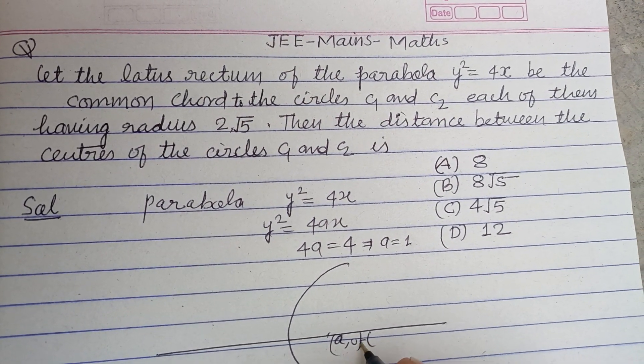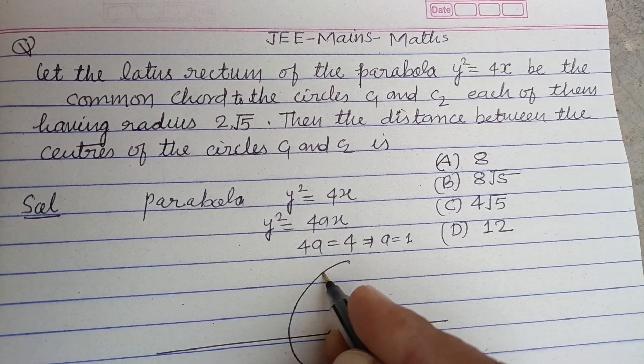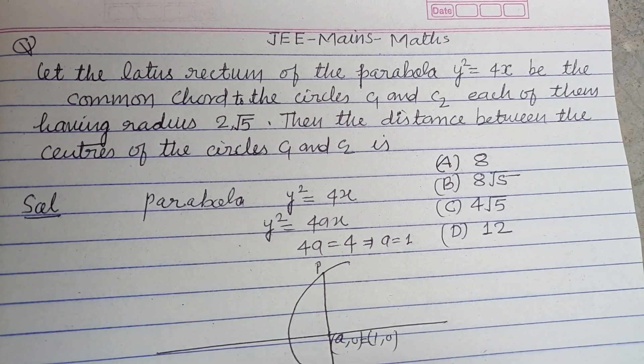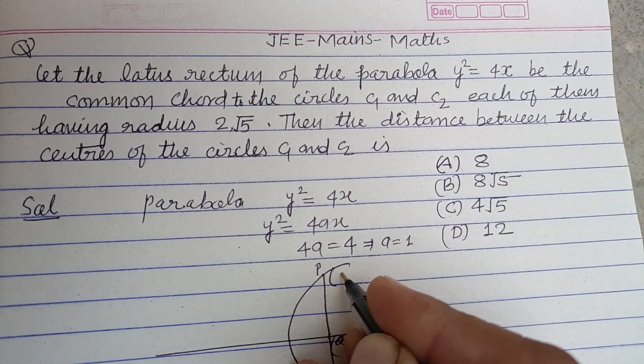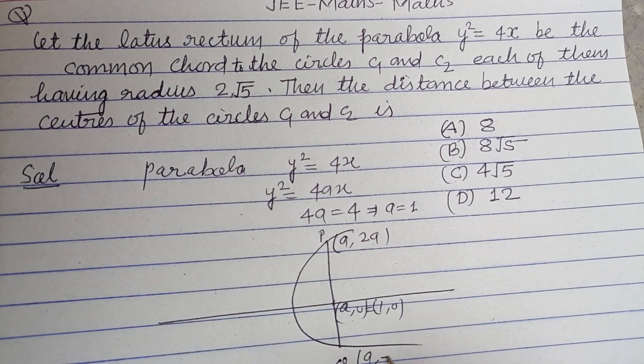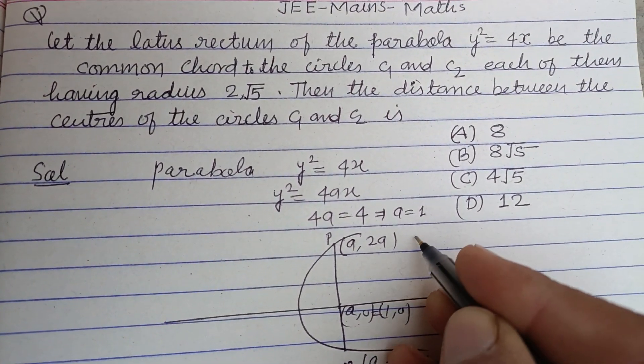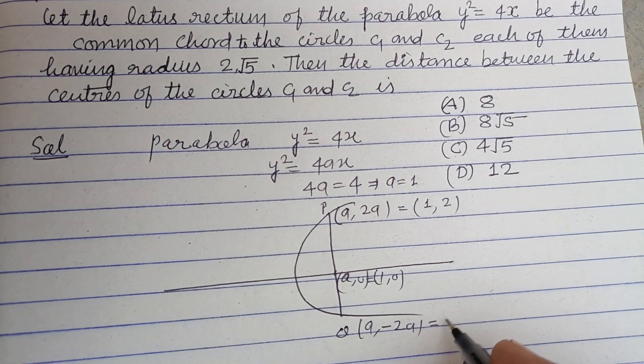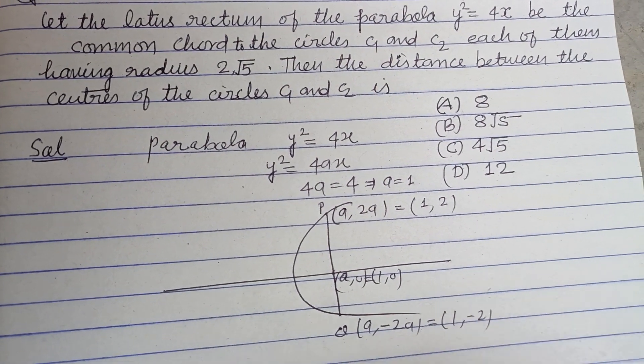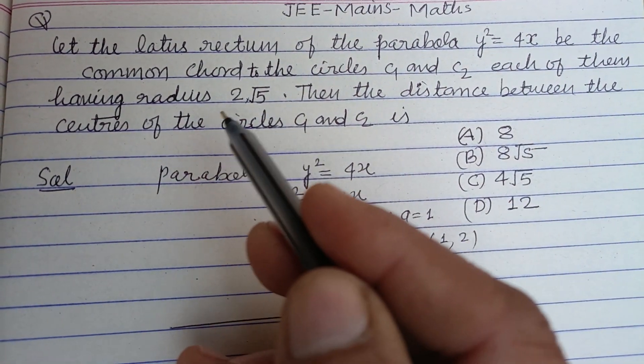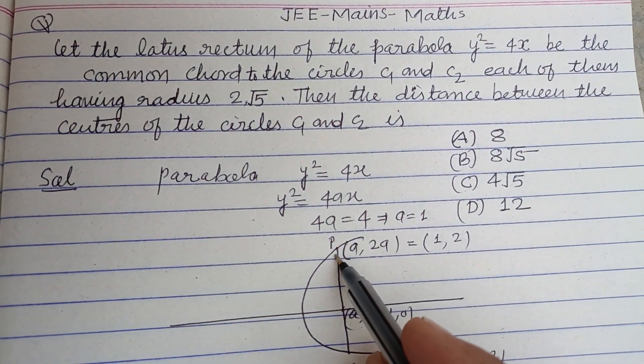And its latus rectum is: this is P, this is Q. So it is (a, 2a) and (a, -2a), which will be (1, 2) and (1, -2). The question is saying that the common chord, this latus rectum, is the common chord of two circles C1 and C2.